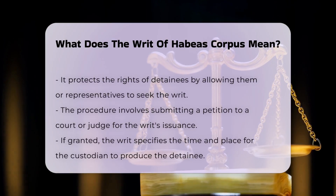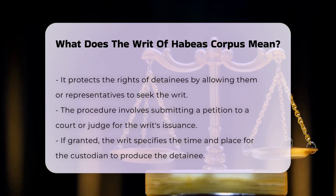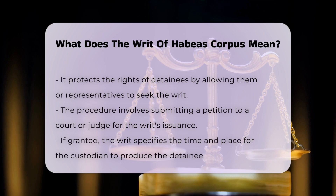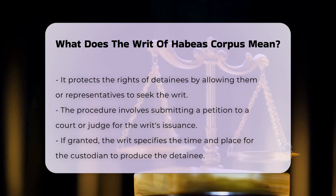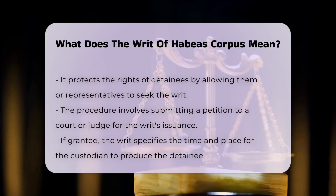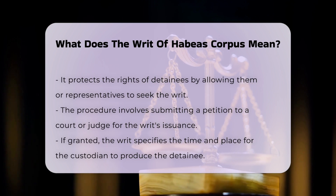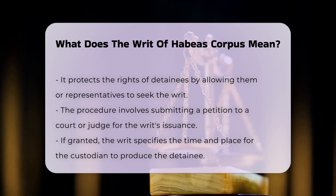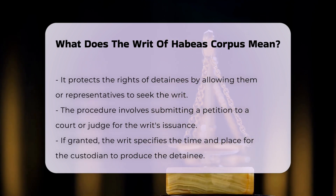The writ can be sought by the prisoner themselves or by another person acting on their behalf, particularly if the detainee is being held incommunicado. This ensures that even if a prisoner is unable to act for themselves, their rights can still be protected.